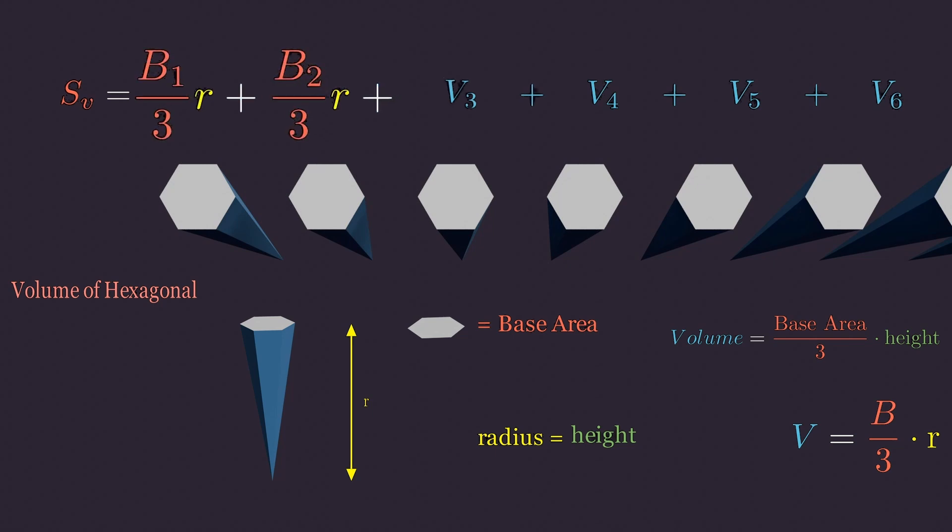Summing the volumes of all these pyramids, we get: Volume of the sphere equals the sum of one-third times the base area times R.